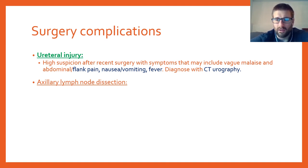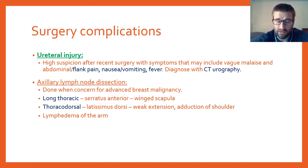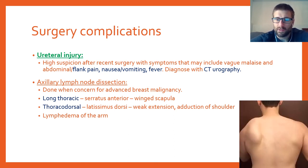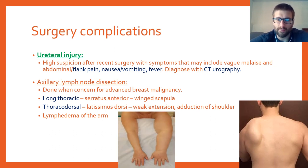Axillary lymph node dissection, done when sentinel lymph node biopsy is positive for malignancy, has important nerve complications. The long thoracic nerve injury causes winged scapula. The thoracodorsal nerve injury affects the latissimus dorsi. Lymphedema of the arm is also a common complication due to removal of axillary lymph nodes. Winged scapula is demonstrated by having the patient push against a wall — the scapula protrudes abnormally.